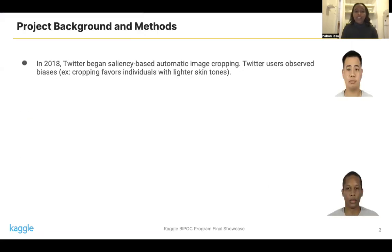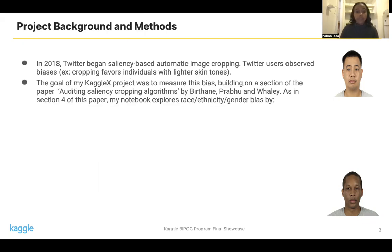In 2018, Twitter began a saliency-based automatic image cropping method. Twitter users observed a lot of biases with the automatic cropping. For example, the cropping would favor preserving white individuals or lighter-skinned individuals in images compared to people with darker skin. The goal of my KaggleX project is to measure this bias, specifically building on a section of the paper titled Auditing Saliency-Cropping Algorithms.